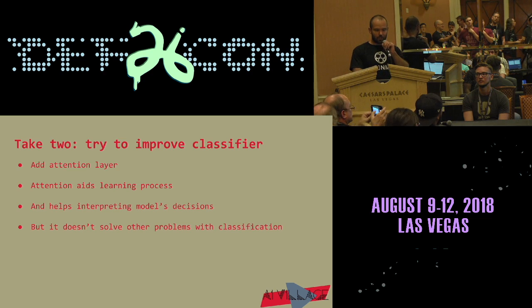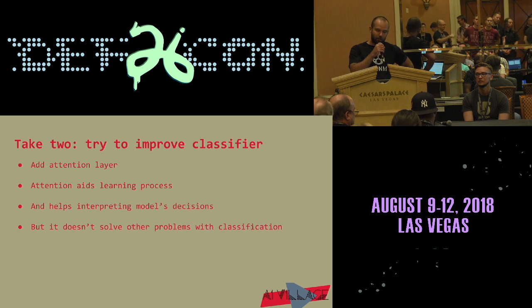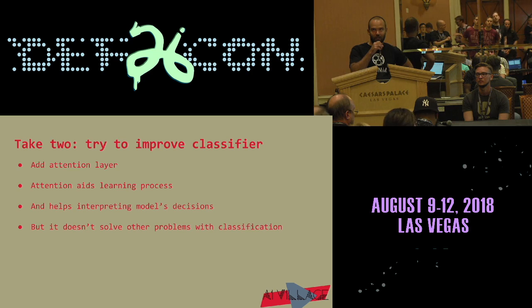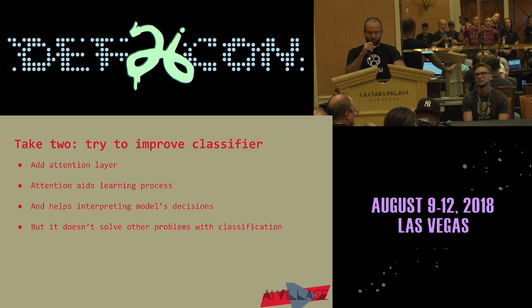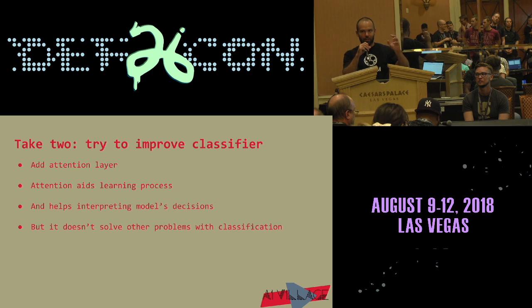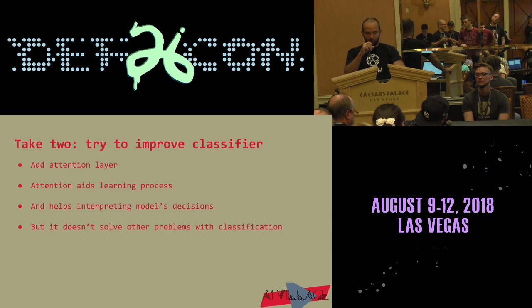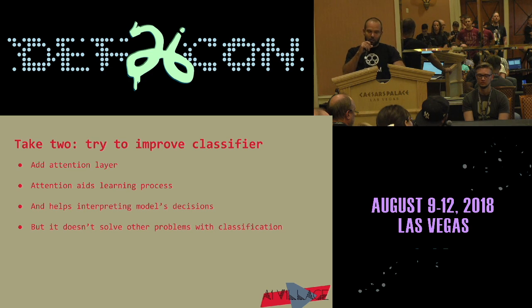We tried to improve our classifier by adding an attention layer. The attention mechanism aids the learning process and makes decision results interpretable — you can highlight the parts of the data the model considered most important in its decisions. But it still doesn't fully solve the problems of classification.